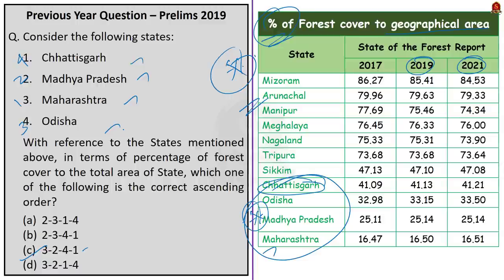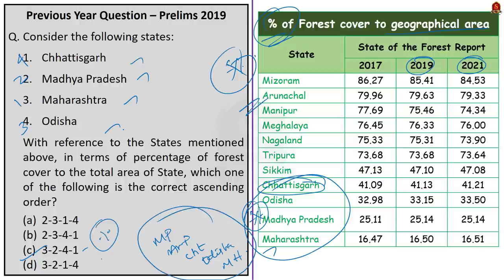So remember: the top five states with highest total forest cover are Madhya Pradesh, Arunachal Pradesh, Chhattisgarh, Odisha and Maharashtra — Madhya Pradesh having the largest. When we talk about percentage of forest cover to geographical area, the northeastern states are at the top. Among these four states, the order is Maharashtra, Madhya Pradesh, Odisha, Chhattisgarh. So even though Madhya Pradesh has the largest total forest cover, its forest cover relative to its geographical area is comparatively less. Always read the question carefully before answering.